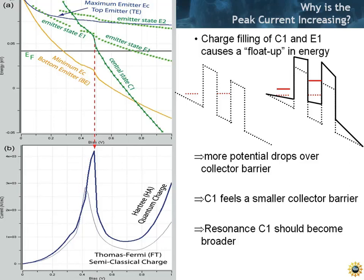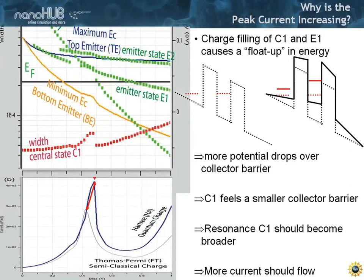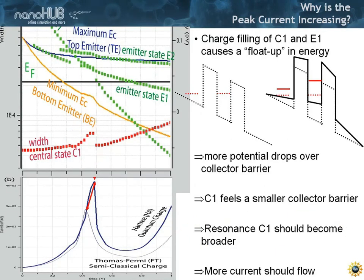Let's see if that is true. Indeed, if we now look at the central resonance C1, the width of it as it's getting floated up in energy actually rises up in width — and this is on a log scale, so a little blip here is quite a bit more current. You also see it drop like a rock again once the charge empties out, because then the potential landscape has changed, the confinement has changed, and the resonance goes back to its empty-state baseline. That is why the current has increased — the resonance becomes broader and then the current increases.